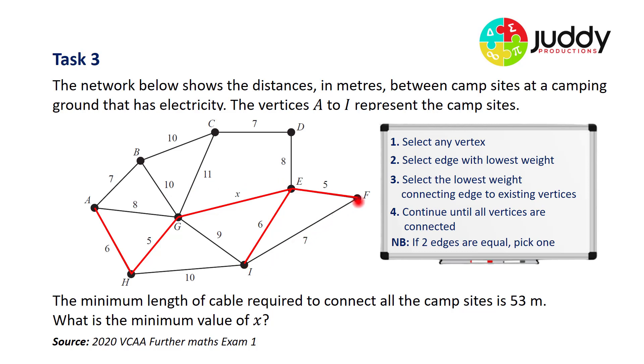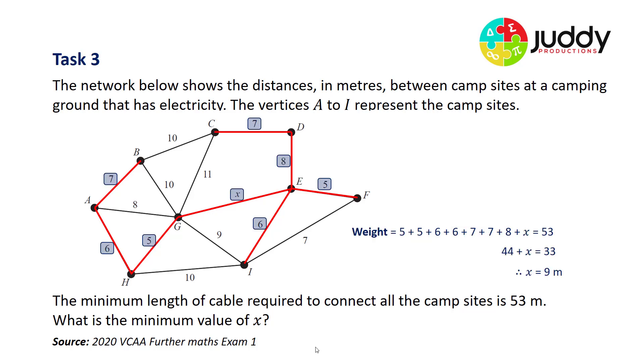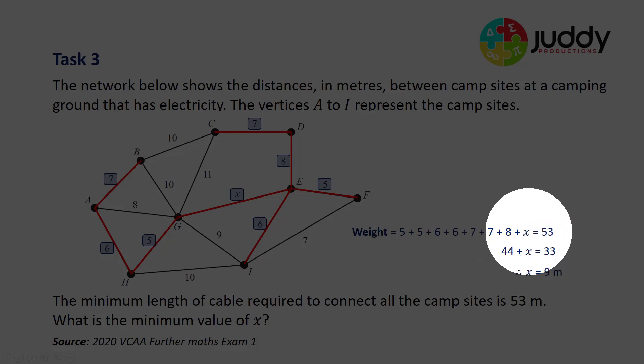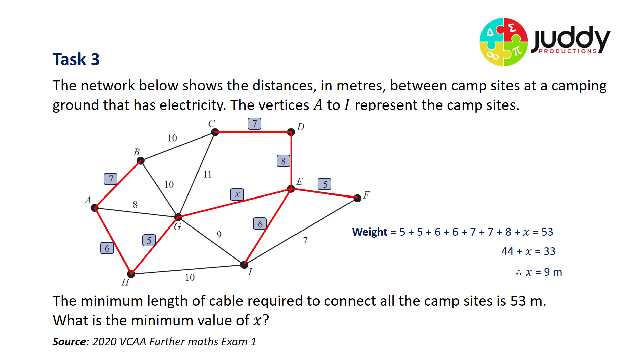Note, I can't use this 7 between I and F, because doing so we complete a cycle, which is a condition of trees. So I'll choose the other 7 between A and B. I continue on this process. The next lowest edge that exists on the connected vertices will be 8 and 8. Again, I can't connect this 8, because I'll create a cycle within my tree. So I select the alternative 8. And finally, my last leg to connect to the unconnected vertex C will be the 7 at the top. I tally up all the weighted edges as such. So the tally is 5 plus 5 plus 6 plus 6 plus 6 plus 7 plus 7 plus 8 plus x the unknown equals 53 as stated in the question. When I add those numbers all together, I end up with 44 plus x equals 33, which means the unknown value for x must be 9 meters. What is the minimum value of x? The answer is 9 meters.